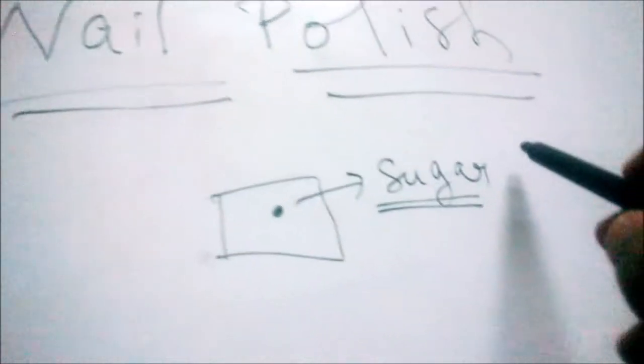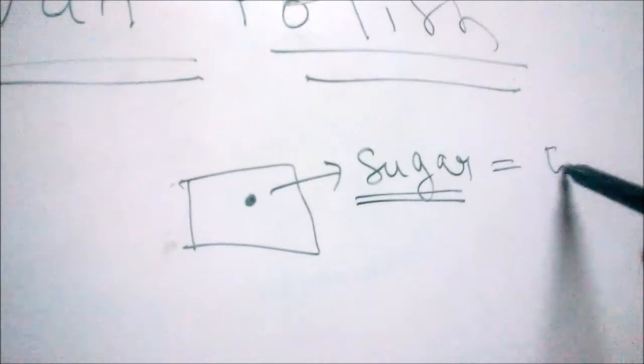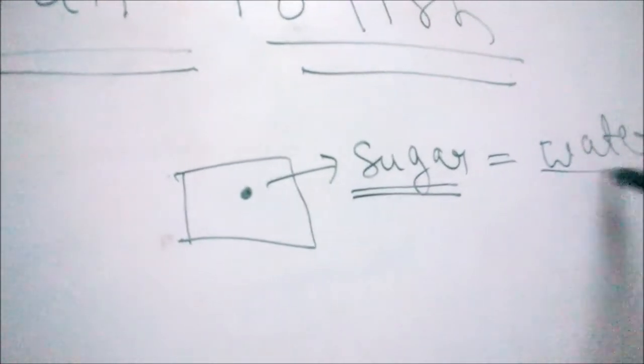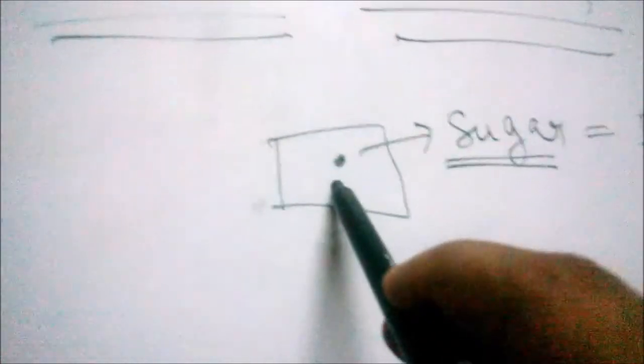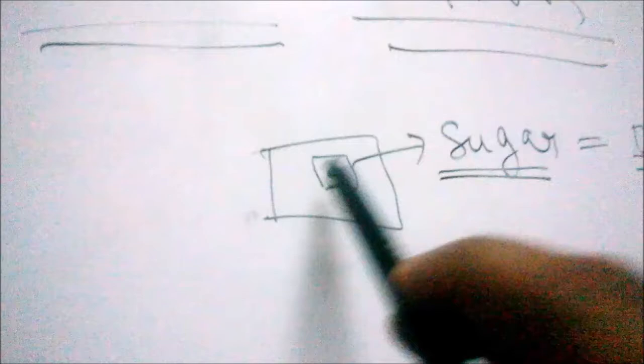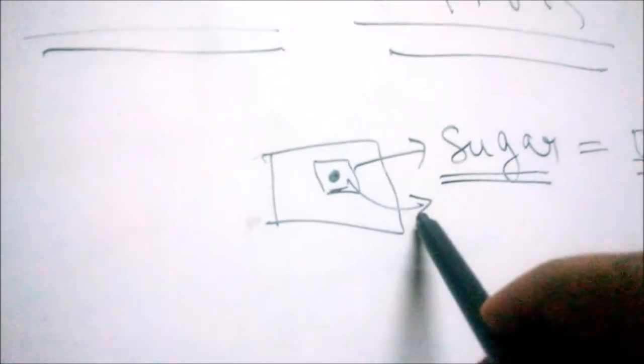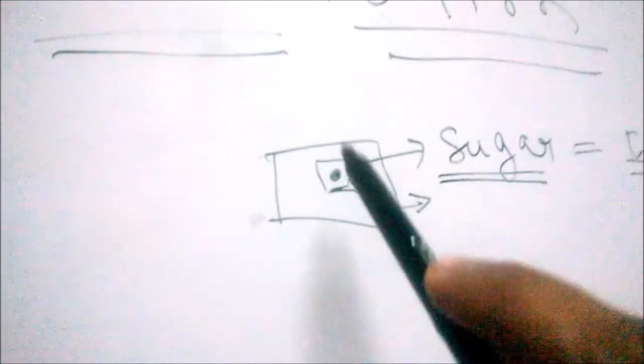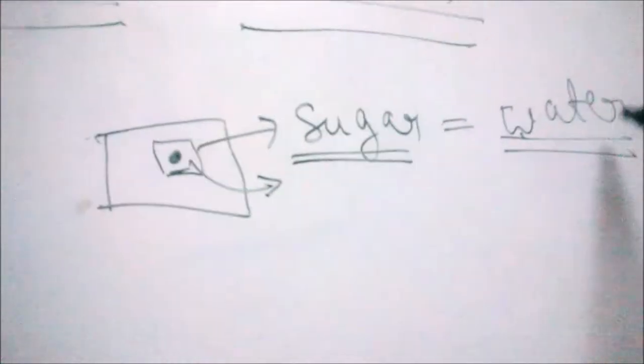Since it is sugar, we have a very simple solution for it. We know that sugar is soluble in water. So what we need is just water and we can apply it on the stain. The sugar will dissolve in the water and it could be easily removed. So if we have a sugar stain on our cloth which has been dried, we can use water as a solvent and the sugar stain will be removed.